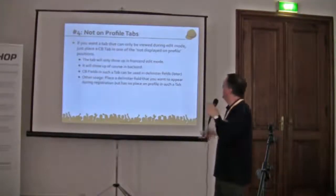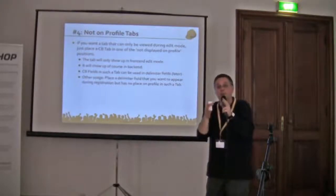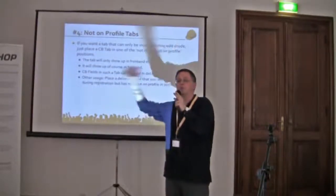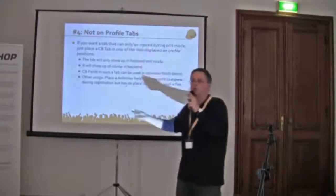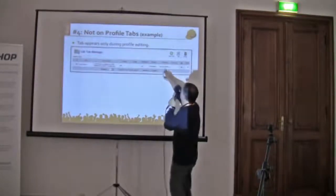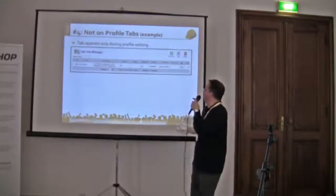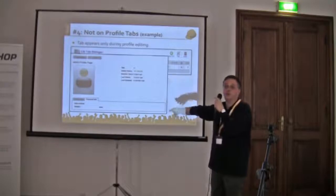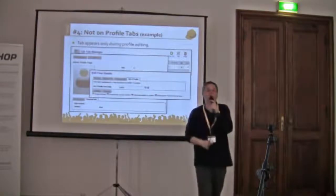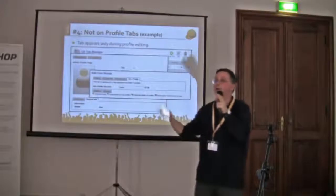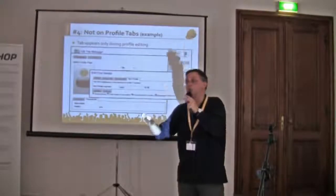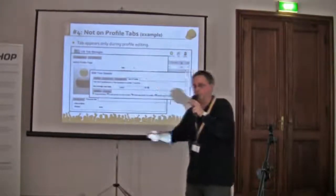You might have a tab that contains information that only appears during registration and you don't want to show it on the profile at all — just place it in the 'not for profile view' tab position and it won't show. Looking at it from the front-end, you don't see anything, but when you edit your profile you'll see it during edit mode. So you can have information a user could update that doesn't really show on their profile, but you can grab that information from a delimiter field.